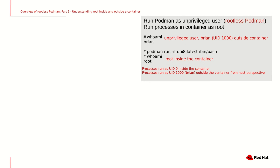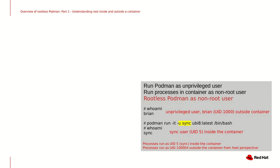In this scenario we are running Podman rootless as the Brian account, however the processes within the container are running as the root account in the container's user namespace. The user namespace maps the root account within the container to the Brian account on the host.